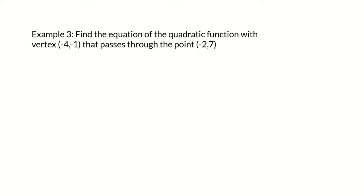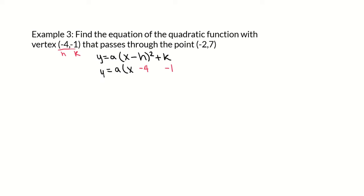Example 3: find the equation of the quadratic function with vertex negative 4, negative 1 that passes through the point (negative 2, 7). We start with vertex form y equals a times x minus h squared plus k. We know the vertex point, which is h comma k, so we plug in negative 4 for h and negative 1 for k, giving y equals a times x minus negative 4 squared plus negative 1, which rewrites as y equals a times x plus 4 squared minus 1.